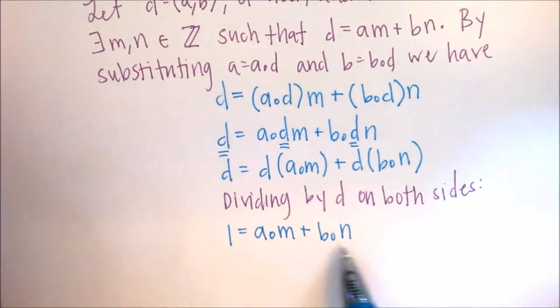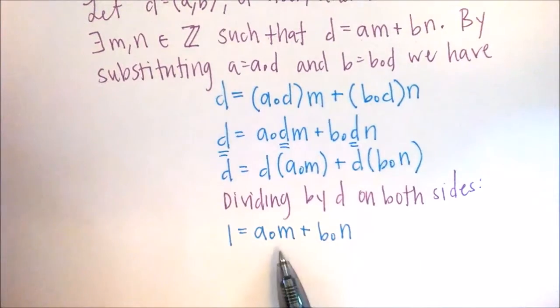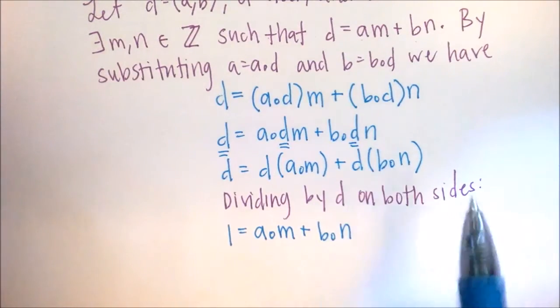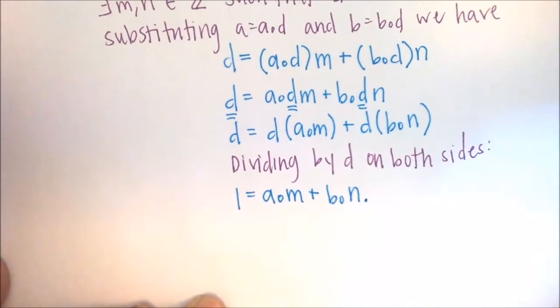So since M and N are integers, A0 and B0, the linear combination of the two is equal to 1. So this is the same thing as saying that the greatest common divisor of A and B is equal to 1 because this is just a linear combination. So we're going to say